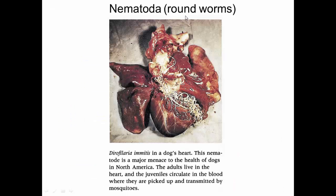First of all, nematodes. Nematodes are one of several different phyla of worms. These are roundworms, distinct from segmented worms. Here's the goriest example I could come up with for these guys — this is what heartworm looks like in the heart of a dog, which is why we try to make sure dogs don't get this. These are worms that actually live inside other organisms. There's a variety of different ecological roles that roundworms can play.